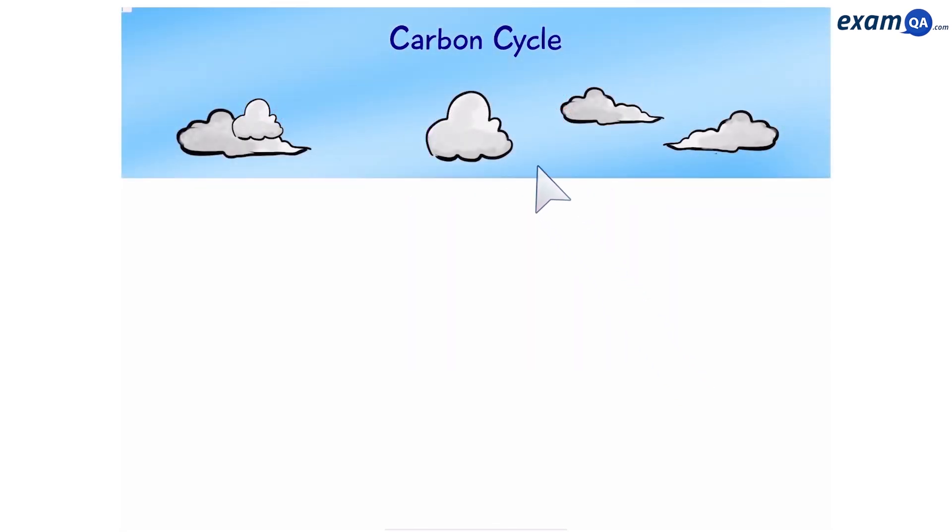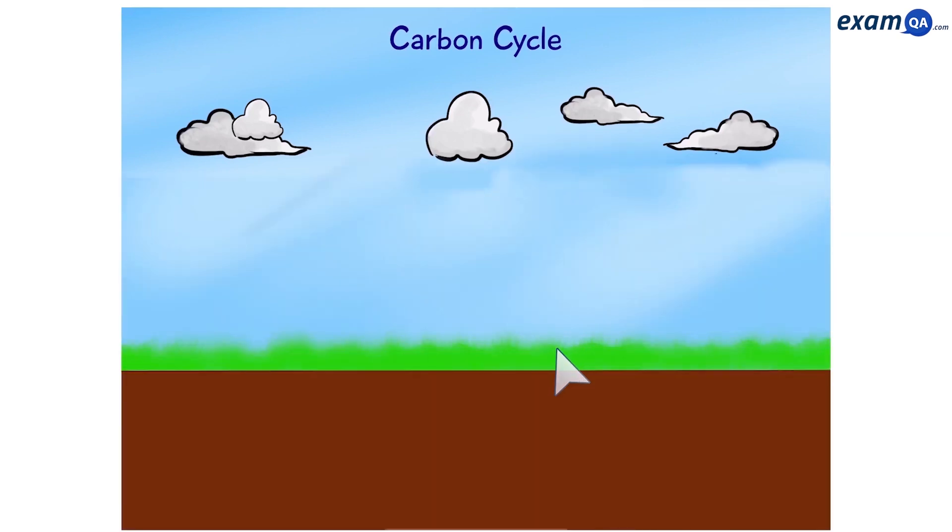In the carbon cycle we're going to see how carbon goes from the atmosphere into the ground and below the ground. Let's start with the atmosphere.